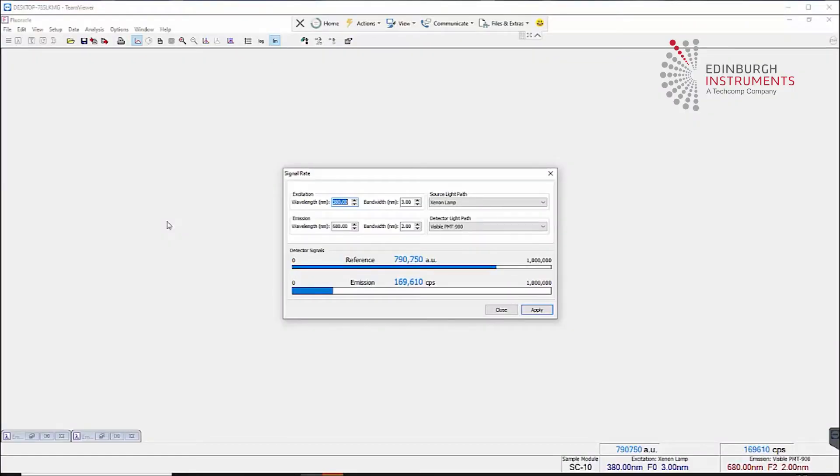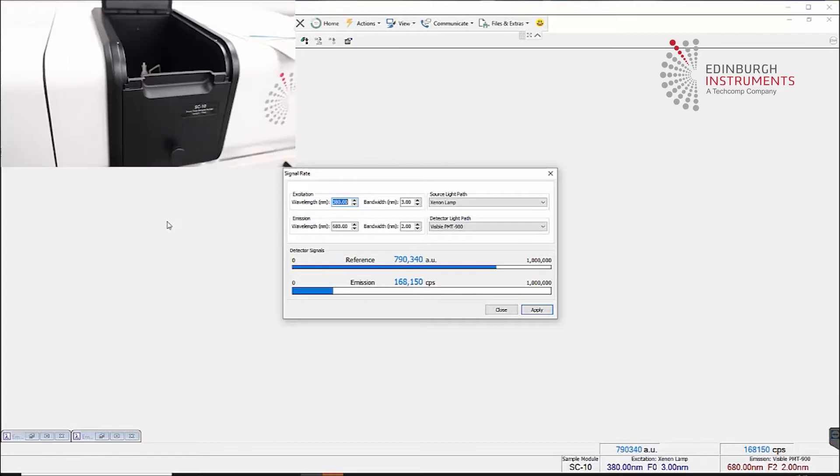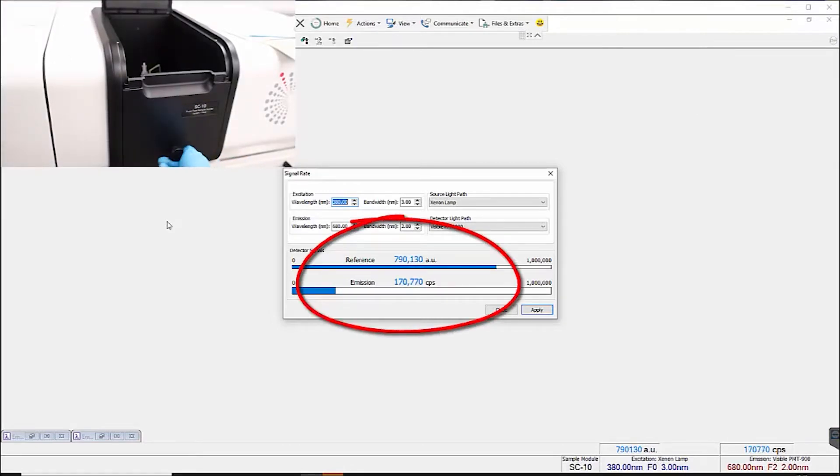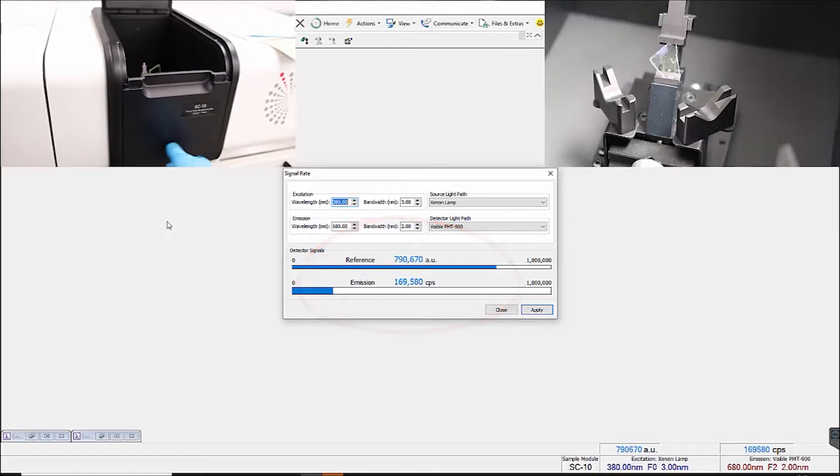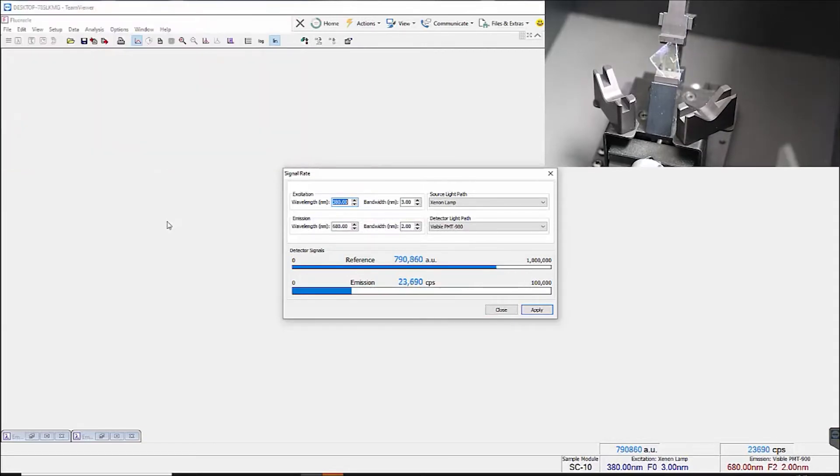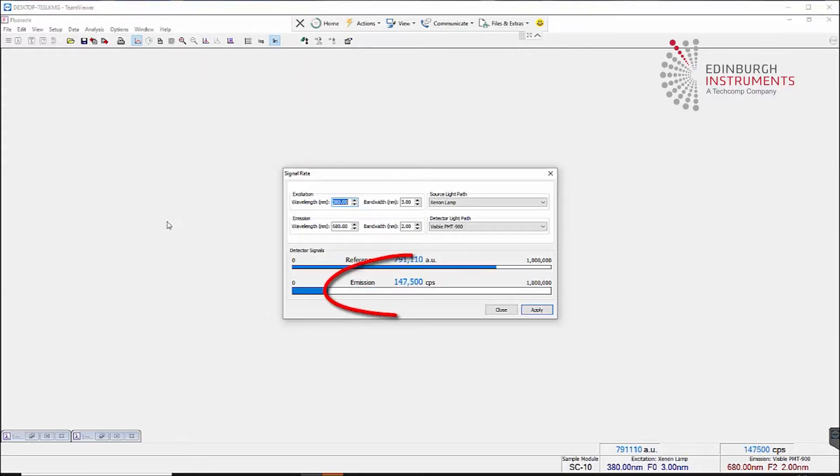After excitation and emission wavelengths are established, this information should be put into the signal rate window and the signal should be observed on EM1. After a PL signal is observed, the positioning wheel should then be moved to maximize the EM1 signal. This confirms the best alignment for the sample signal, excitation, and emission optical axis. This wheel should be moved every time a source or sample is changed to verify the best alignment.